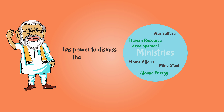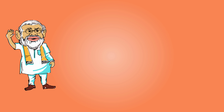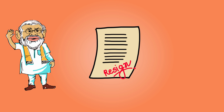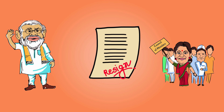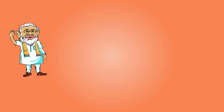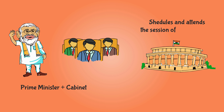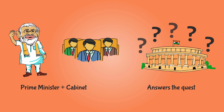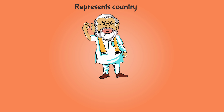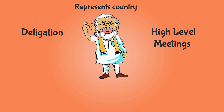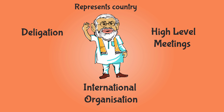He also has the power to dismiss ministers. The resignation of the Prime Minister is considered to be the resignation of the entire Council of Ministers. The Prime Minister, in consultation with the cabinet, schedules and attends the sessions of the Houses of Parliament and is required to answer questions from the Members of Parliament. He represents the country in various delegations, high-level meetings, and international organizations that require the attendance of the highest government officer.